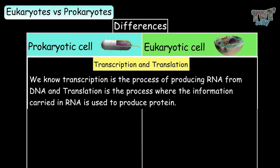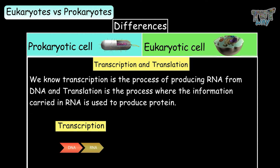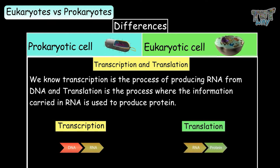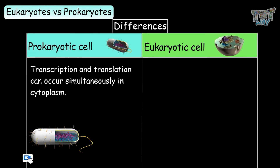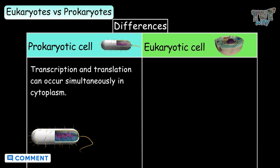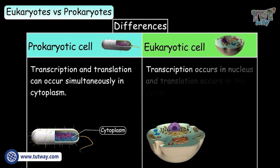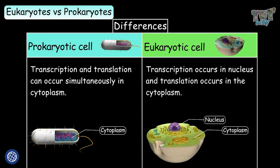Regarding transcription and translation: transcription is the process of producing RNA from DNA, and translation is the process where the information carried in RNA is used to produce proteins. In prokaryotes, transcription and translation both occur simultaneously in the cytoplasm. In eukaryotes, transcription occurs in the nucleus and translation occurs in the cytoplasm.